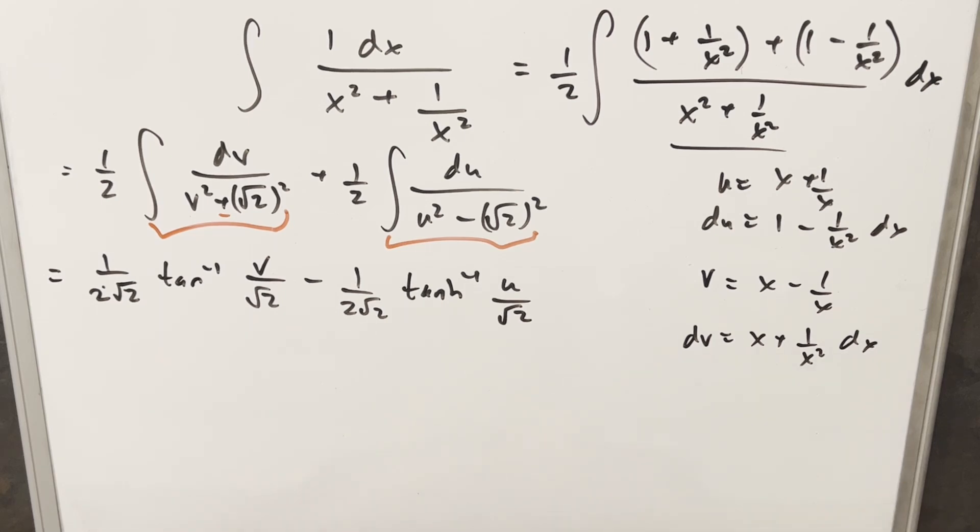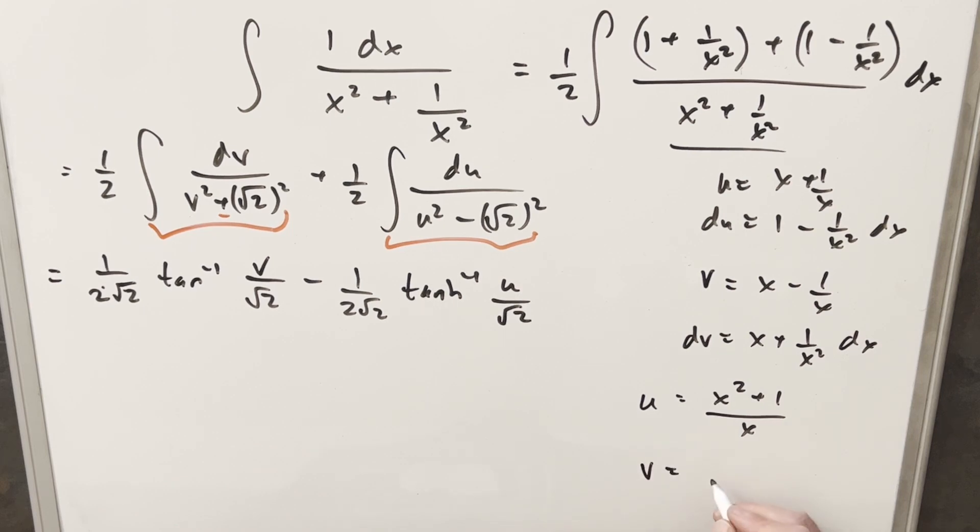And now we can back substitute, but actually what I'm going to do first is just simplify. So for u, I'll get a common denominator and write this as x squared plus 1 over x. Then for v, doing the same thing, we can write this as x squared minus 1 over x. So now we can back substitute.